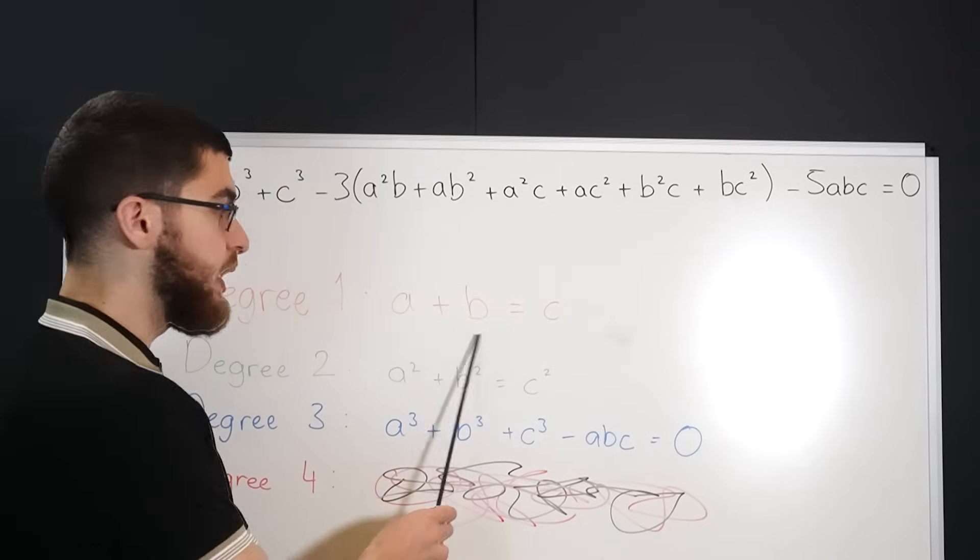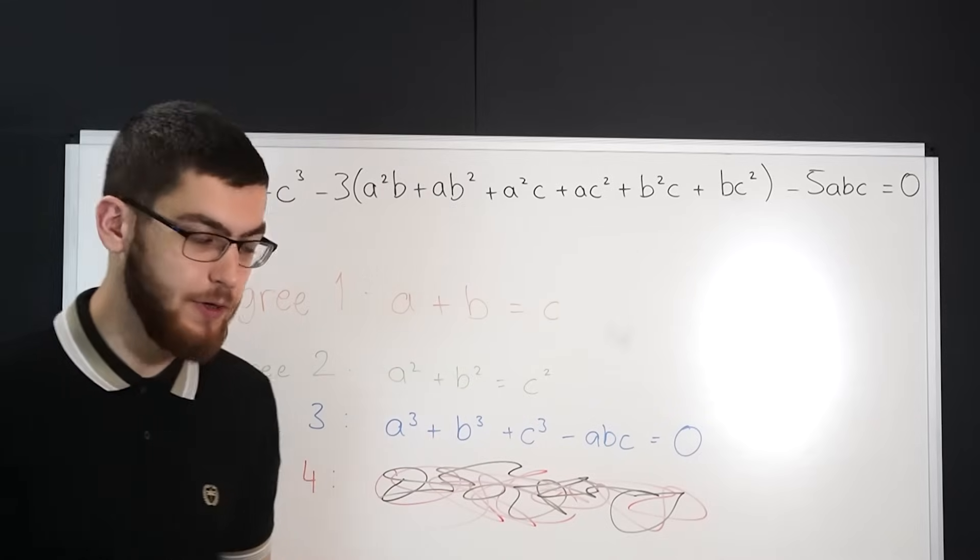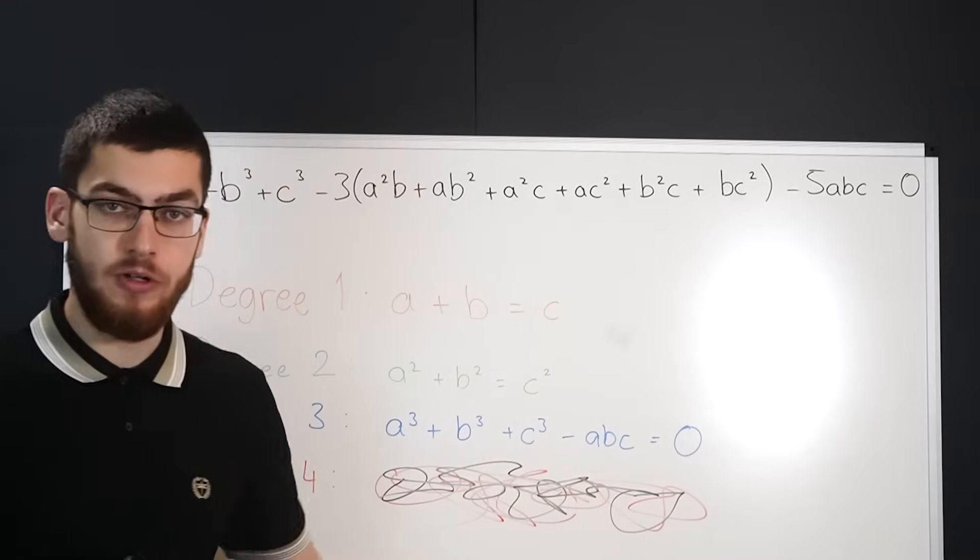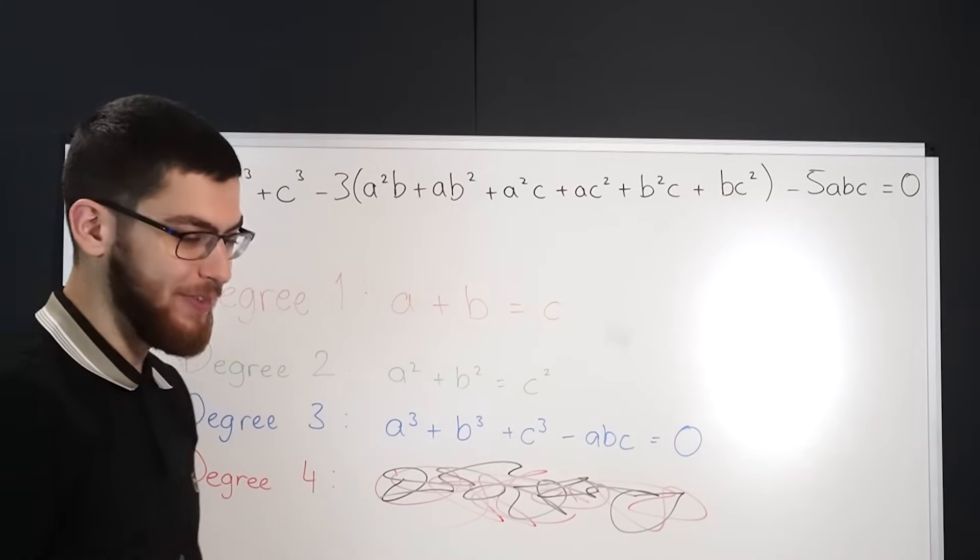Degree 1 is piss easy, if you can't solve this then go back to watching Cocomelon or something, you're not in the right place. Degree 2 is easy for a mathematician but for most people you might find it difficult. Degree 3 is quite hard, quite difficult, it's going to take some time to solve it. And degree 4 is, oh my god, what the... Nah.